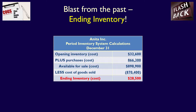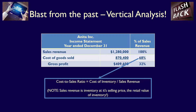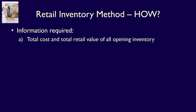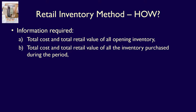Both of these concepts — the calculation of ending inventory when we have the available for sale and the cost of goods sold, and the relationship between the cost of inventory and the sales revenue, the retail value of inventory — will help us understand the retail inventory method and how it works. To use the retail inventory method, specific information is required: we need the total cost and the total retail value of all opening inventory, the total cost and the total retail value of all inventory purchased during the period, and the total actual sales revenue for the period. Let's use a basic example to demonstrate this method of estimating ending inventory.